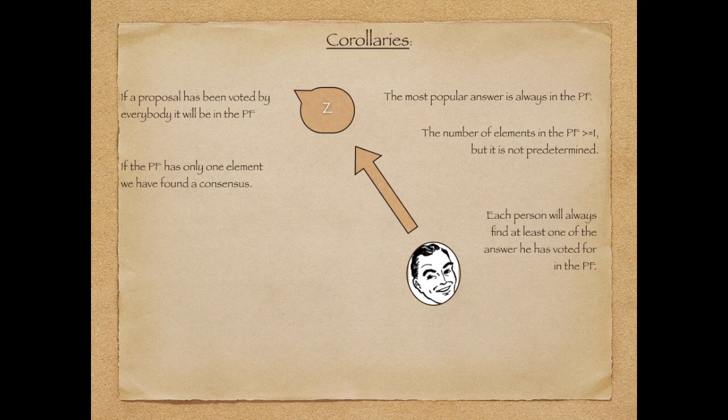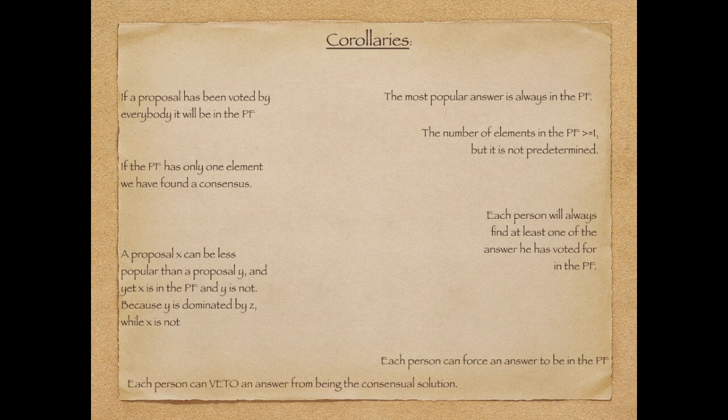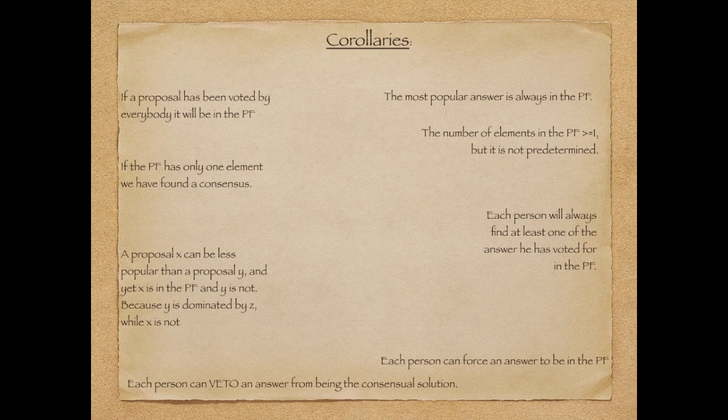I have to say I really like this property. A proposal can be less popular than another proposal but still be in the Pareto Front. Each person can force an answer to be in the Pareto Front. So each person is extremely powerful. You vote for one answer and only for one, you are really forcing that answer to be in the Pareto Front. And similarly, each person can veto an answer from being in the consensus, because the consensus needs to have everybody voting for that one, and if one person is missing that proposal. So each person has a lot of power in this system.